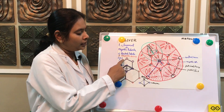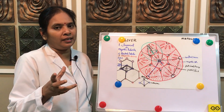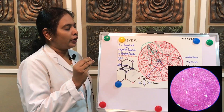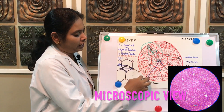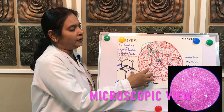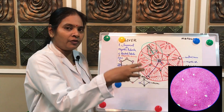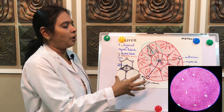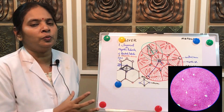In the liver, the typical hexagonal arrangement of the hepatic lobule is seen only in the pig, not in human beings. In humans, the lesser amount of connective tissue does not produce a characteristic septal arrangement of each lobule in hexagonal shape. In human liver, we only see the central vein with hepatocytes radiating outward.